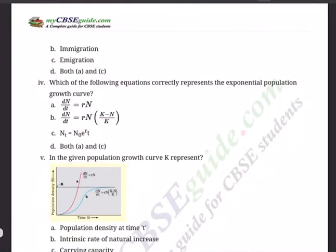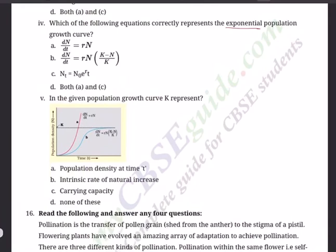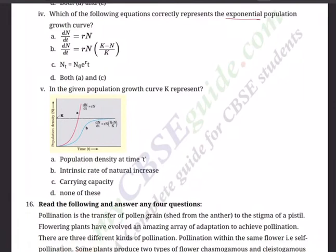Sub-question 2: Which factors influence population density under normal conditions? Options: A) Deaths, B) Immigration, C) Emigration, D) Both A and C. Sub-question 4: Each of the following equations correctly represents exponential population growth. Options: A) dN/dt = rN, B) dN/dt = rN × (K−N)/K, C) Nt = N0 × e^(rt), D) Both A and C. We are talking about the exponential population growth curve.